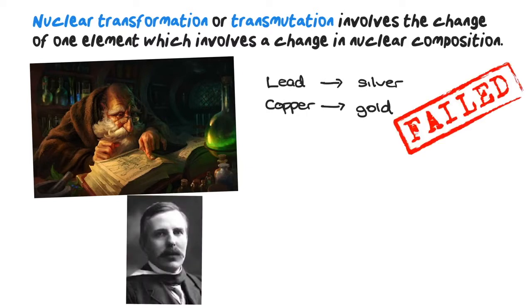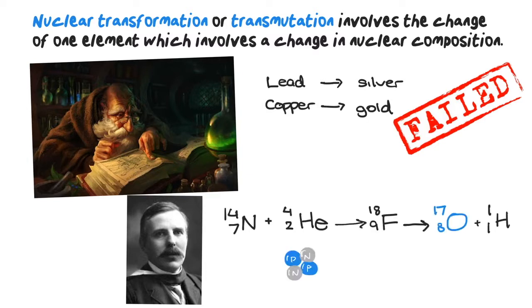However, Ernest Rutherford succeeded when he bombarded nitrogen-14 with alpha particles to produce oxygen-17. The equation for this two-step nuclear transformation is shown.